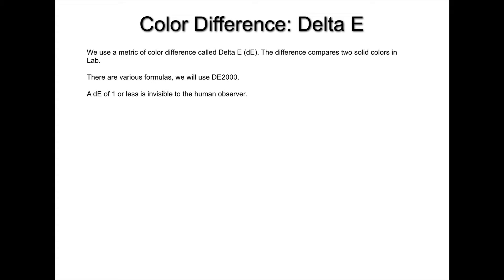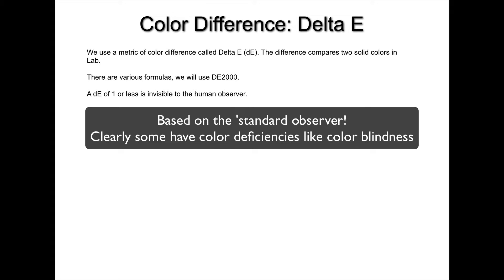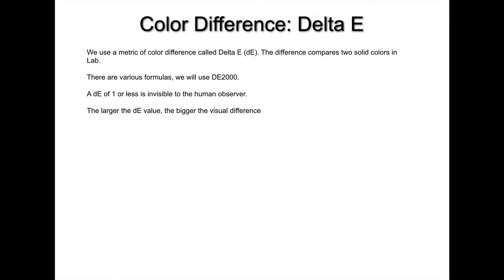A Delta E of one or less is invisible to the human observer. We're looking at the values of two solid pixels and coming up with a metric for how different they are in terms of visibility. If two color patches have a Delta E of one or less, we can't perceive the difference — they look identical. Values below one are insignificant. The larger the Delta E value, the bigger the visual difference.